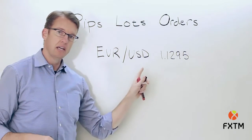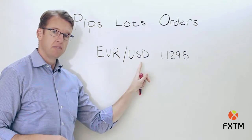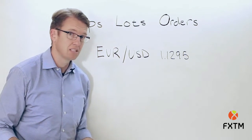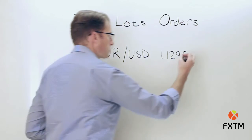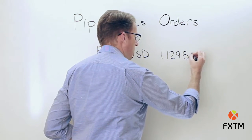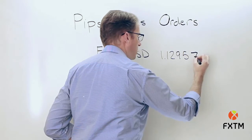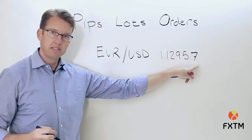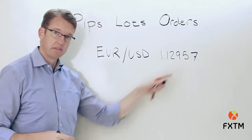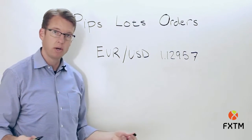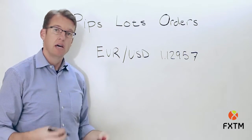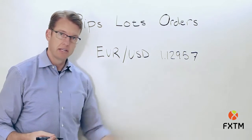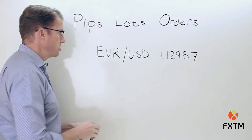The exception to this rule — where the pip stands for the fourth decimal place — is anything where you have the yen on the right side of the exchange rate. If the yen is the quote currency, then the pip will be the second decimal place. However, most currency pairs these days are quoted all the way out to the fifth decimal place, so a change in the fifth decimal place would be a change of one point. With yen pairs, that extends to the third decimal place.